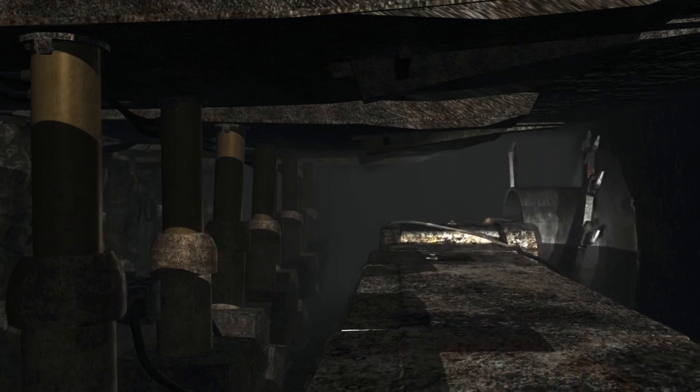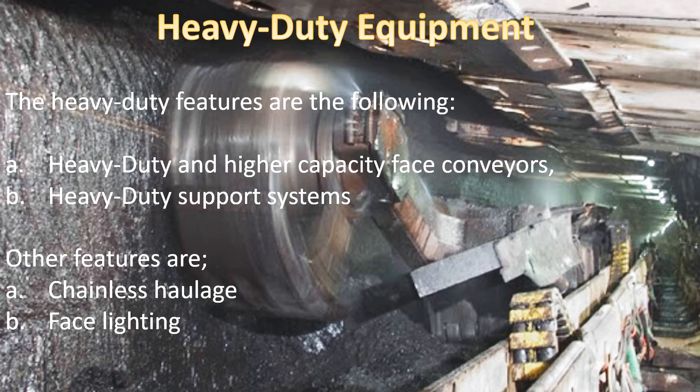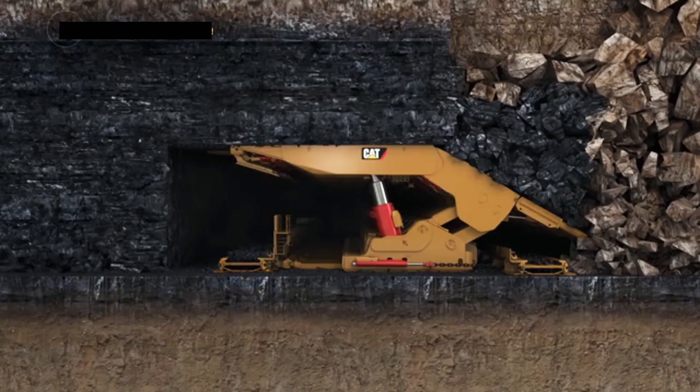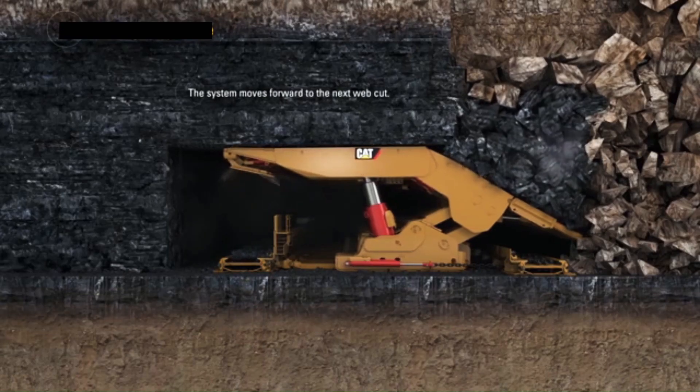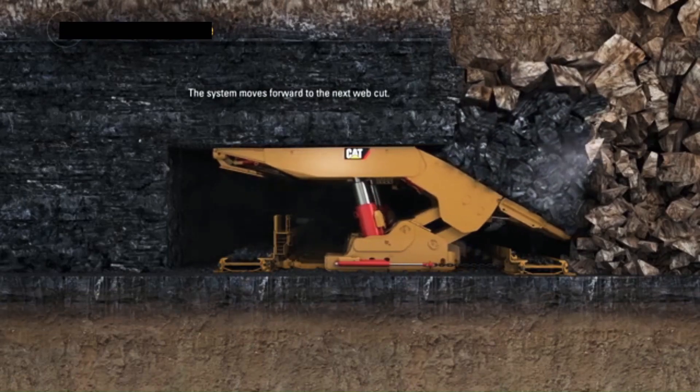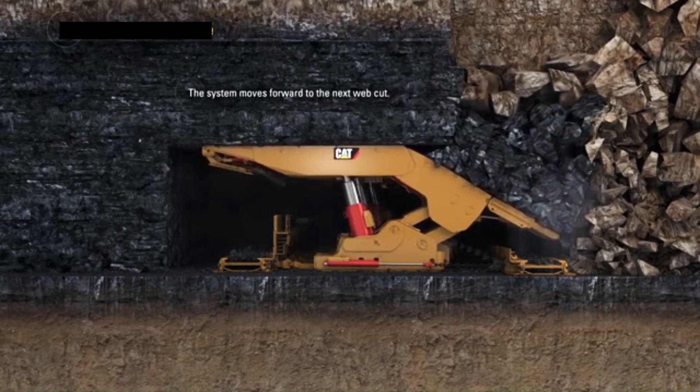Heavy duty equipments mein hain: high capacity heavy duty face conveyers, heavy duty support system, and other features like chainless haulage and face lighting. Power support ko jo face ke along aage jabra hai — jo coal pichhe reh gayi wo pichhe ke conveyor mein chali gayi, aur baaki rocks ko hum fall hone ke liye chhod dete hain.